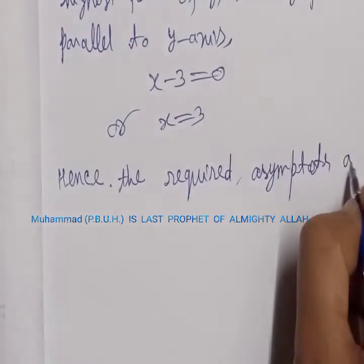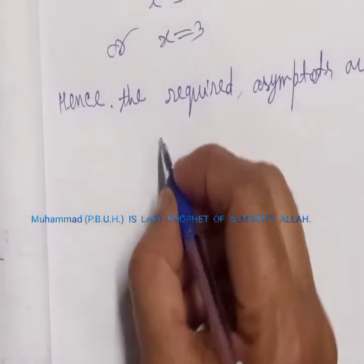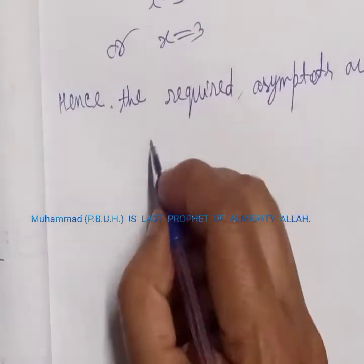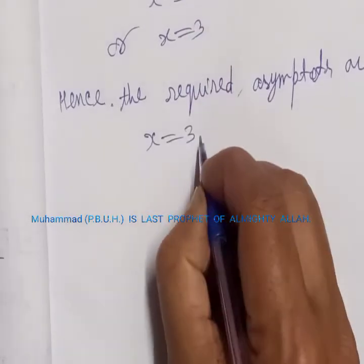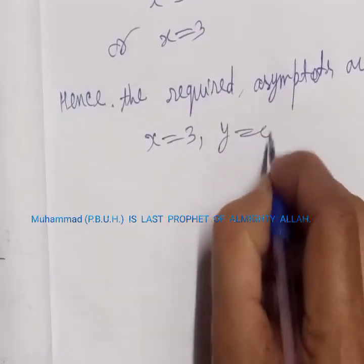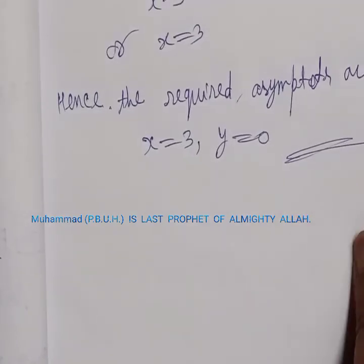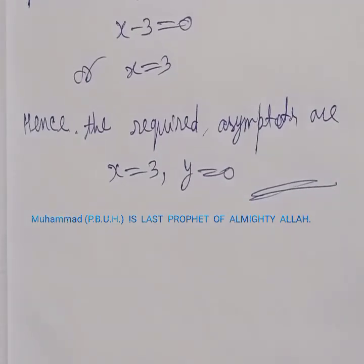Therefore, the required asymptotes are x equal to 3 and y equal to 0. Thank you very much for listening. Alhamdulillahi rabbil alamin.